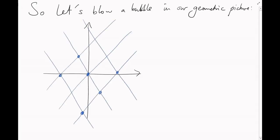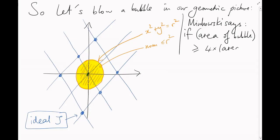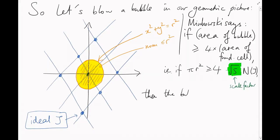Okay, so let's sit at the origin and blow a circular bubble, x squared plus y squared equals r squared for some radius r. As we've just discussed, all points on or inside this bubble have norm at most r squared. Now, Minkowski's theorem says that if we choose the radius so that the area of this circle, pi r squared, is 4 times the area of a fundamental cell, that's 4 times root 5 times the norm of j, then this bubble will contain a non-zero element alpha of j.